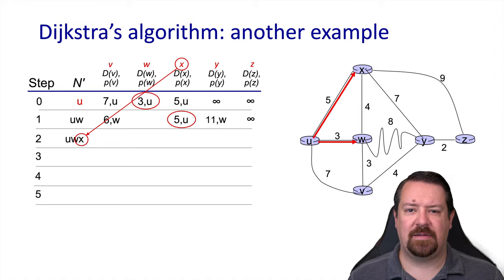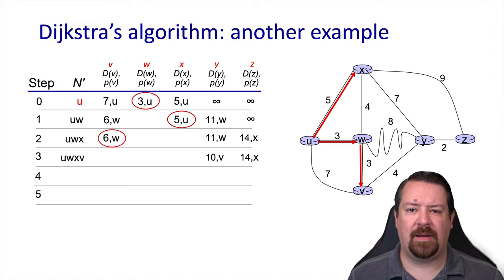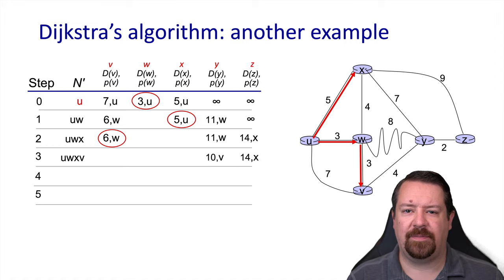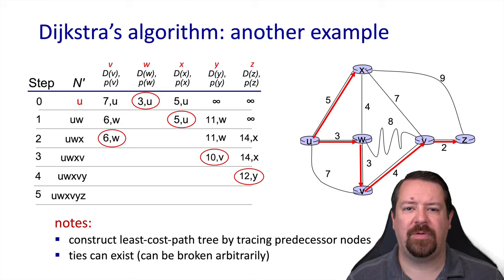From that row, the least cost neighbor is x, so we add that to n' and look at x's neighbors. v doesn't connect directly to x so no update; the cost to y via x is higher so no update there. But now we have a path to z and add that cost to the table. The lowest cost next is v, so we add that to n'. v directly connects to w and y — w is already in n', but it does improve our cost to y, and in a later iteration that will also improve our cost to z. Next, we take y and add it to n', and we see the improved cost to z via y. Lastly, we add z to n'. As we saw in the previous example, there can be ties, and at that point it doesn't matter which node is selected for the next iteration.